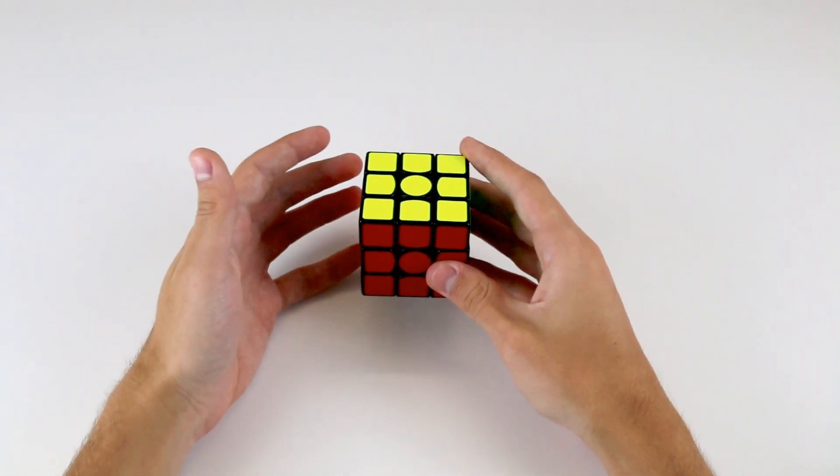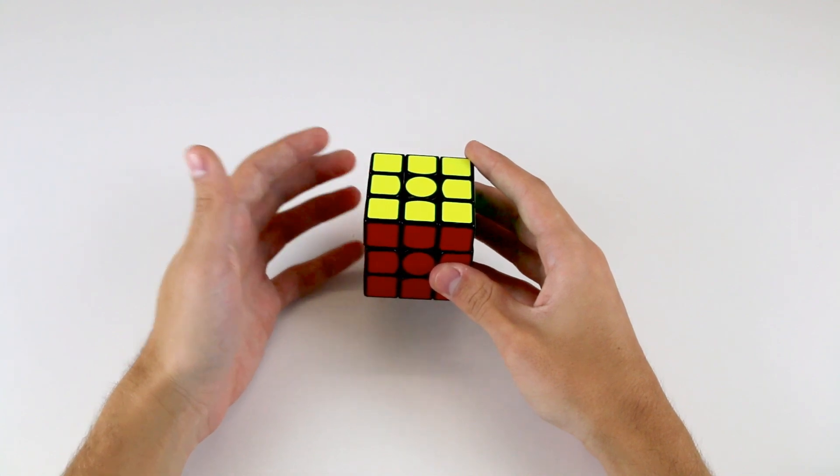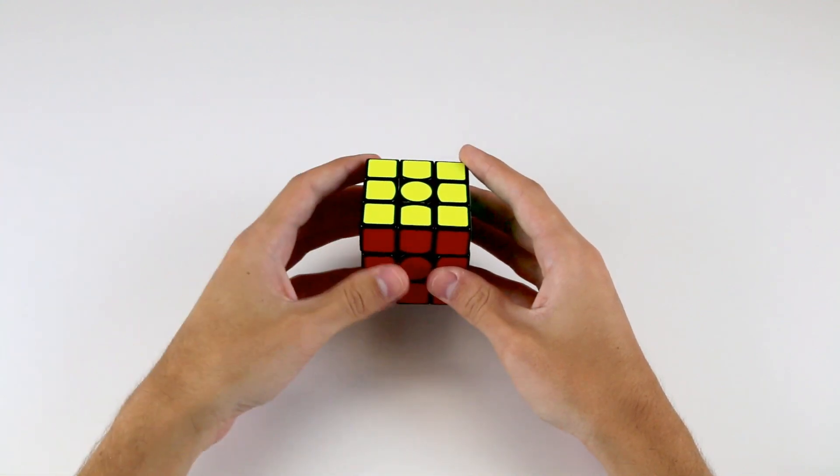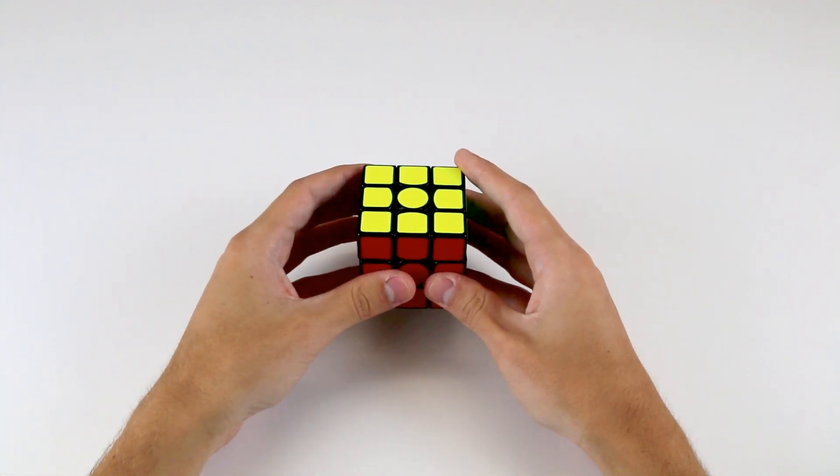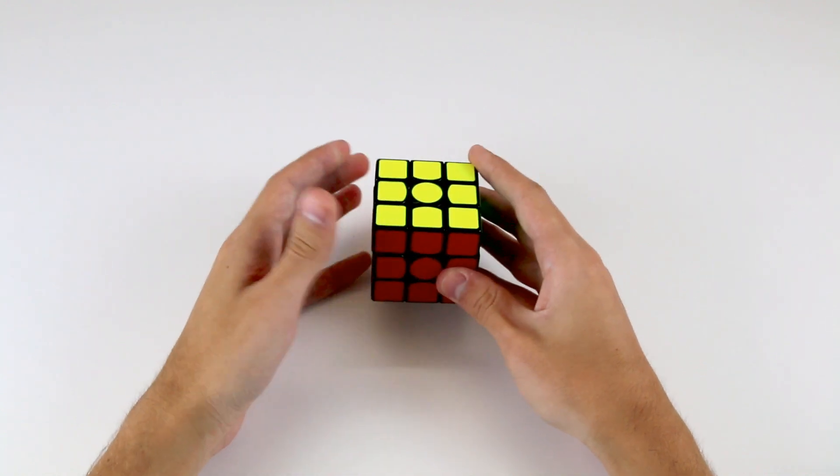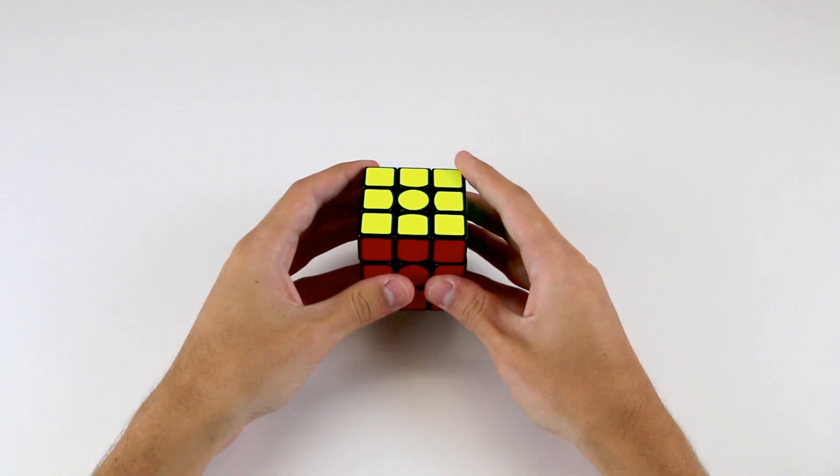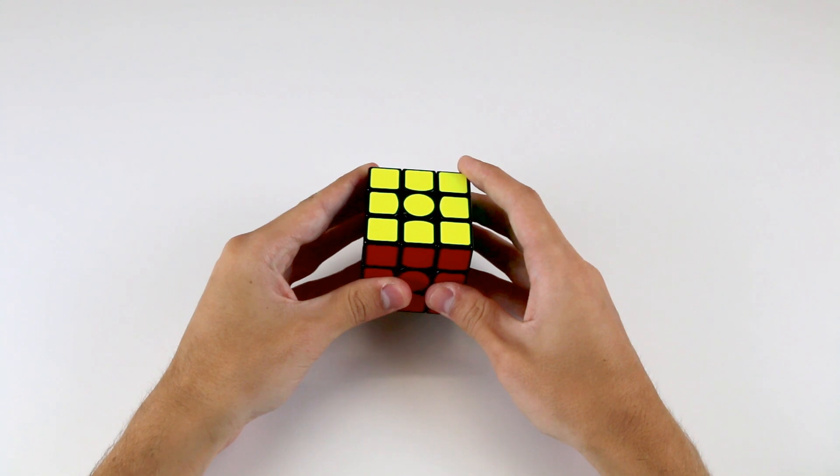To familiarize yourself with this notation, try thinking of a notated move, and then perform the corresponding turn on a cube. It can sometimes be slightly confusing deciding which way is clockwise and which way is anti-clockwise, and it takes a little bit of practice to get used to this.